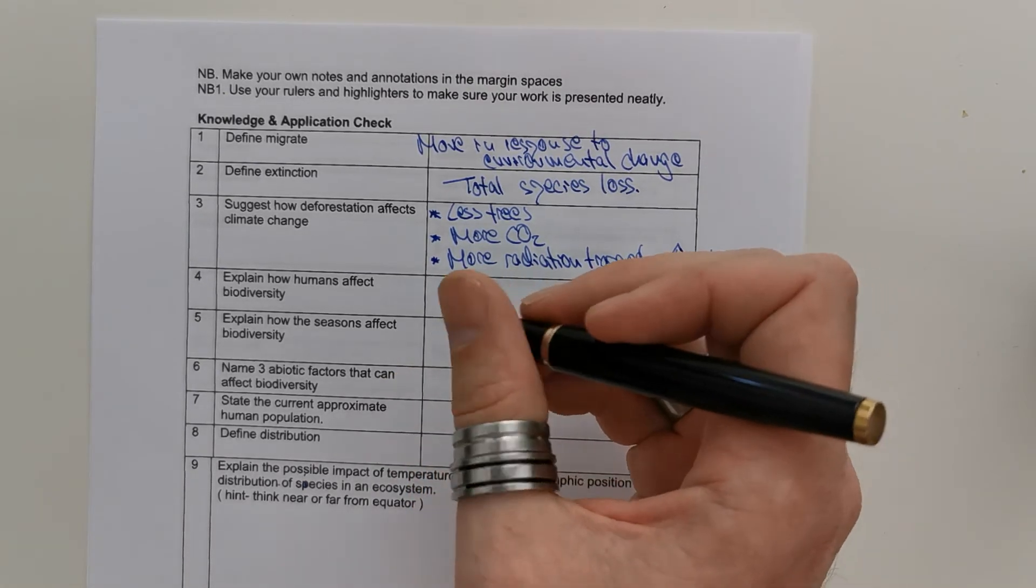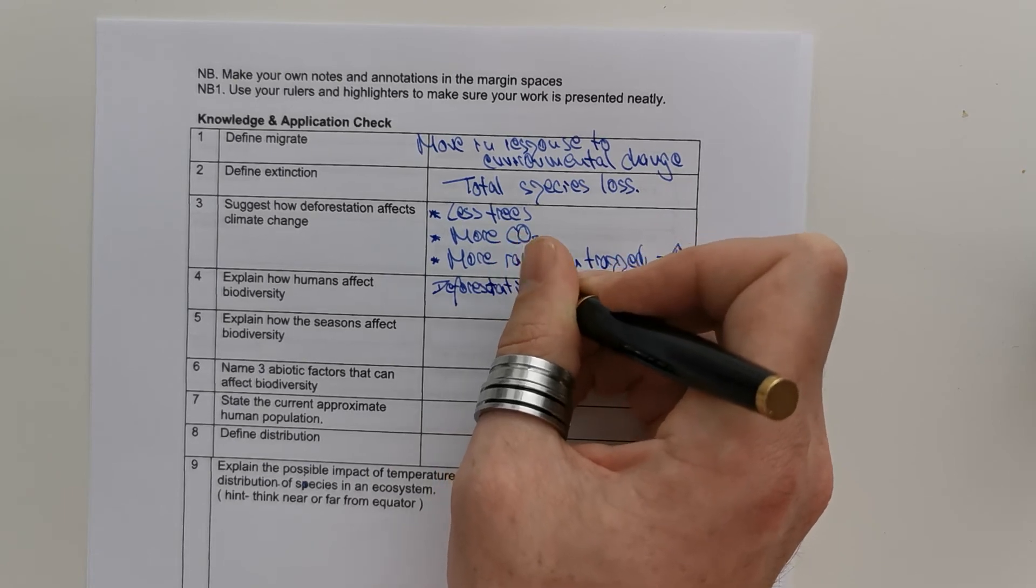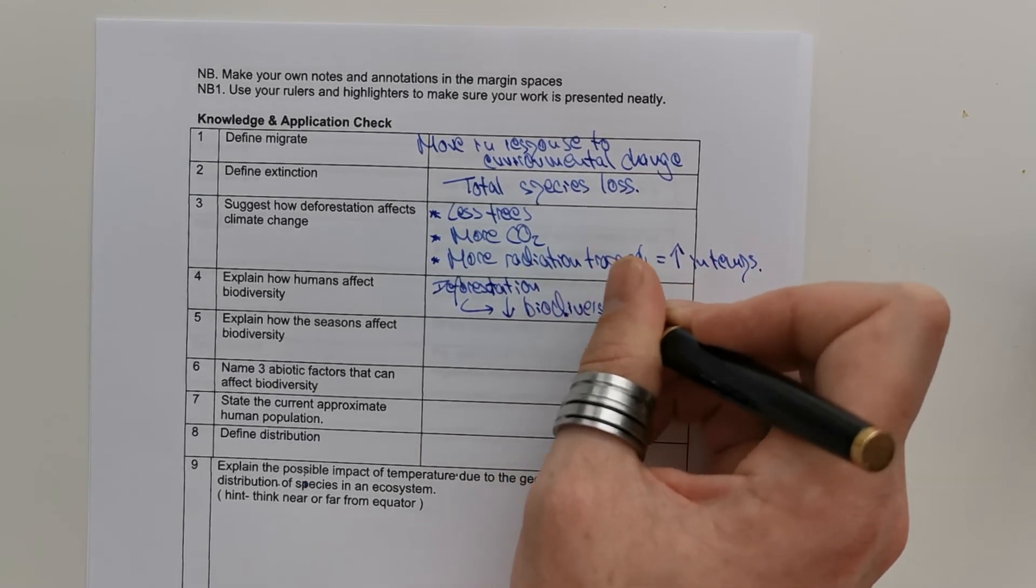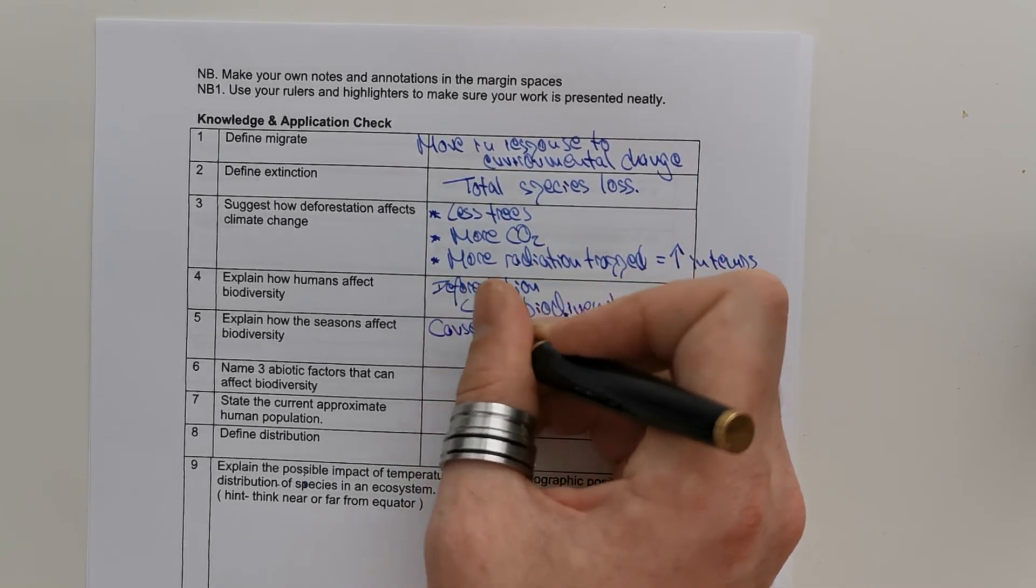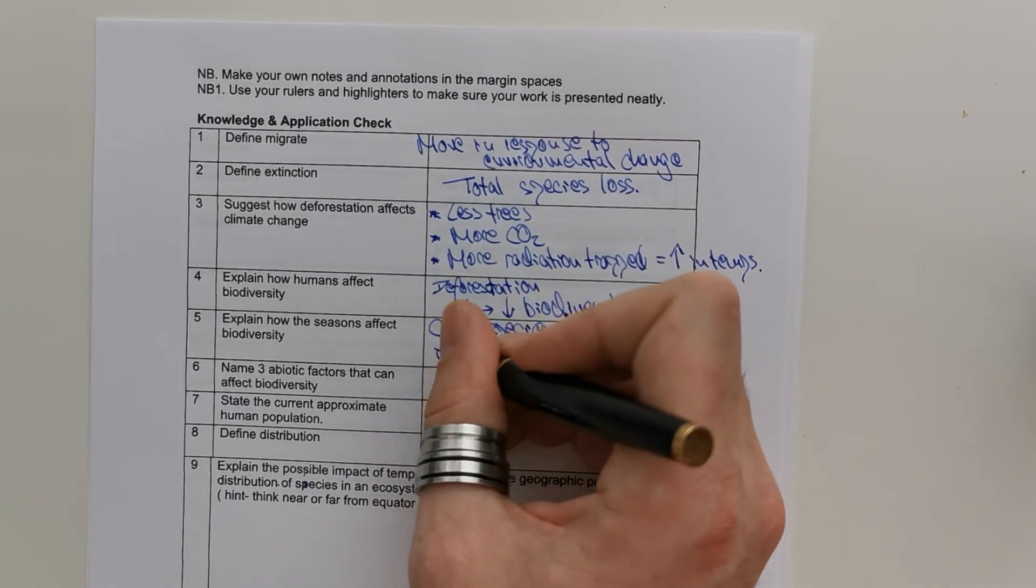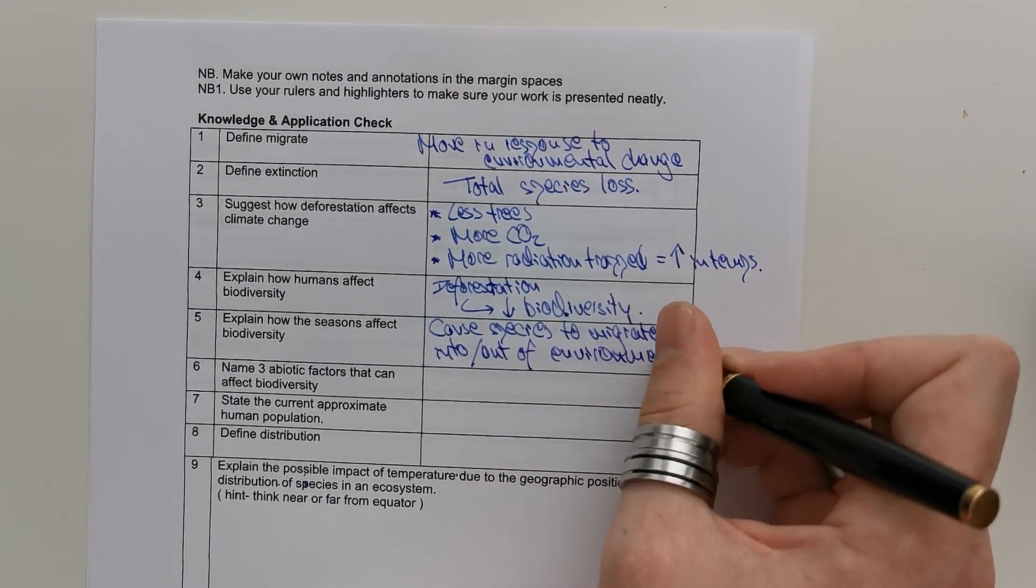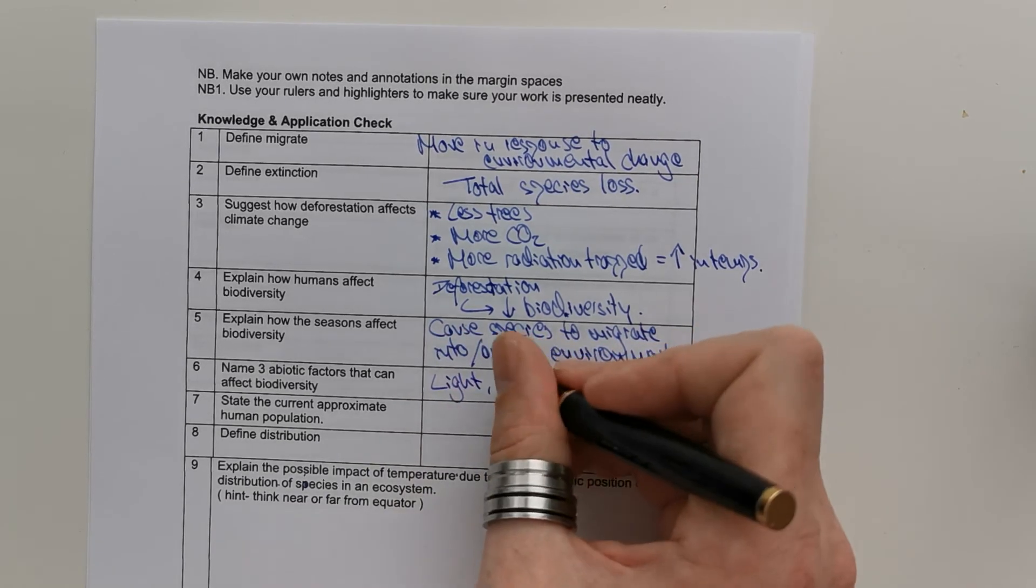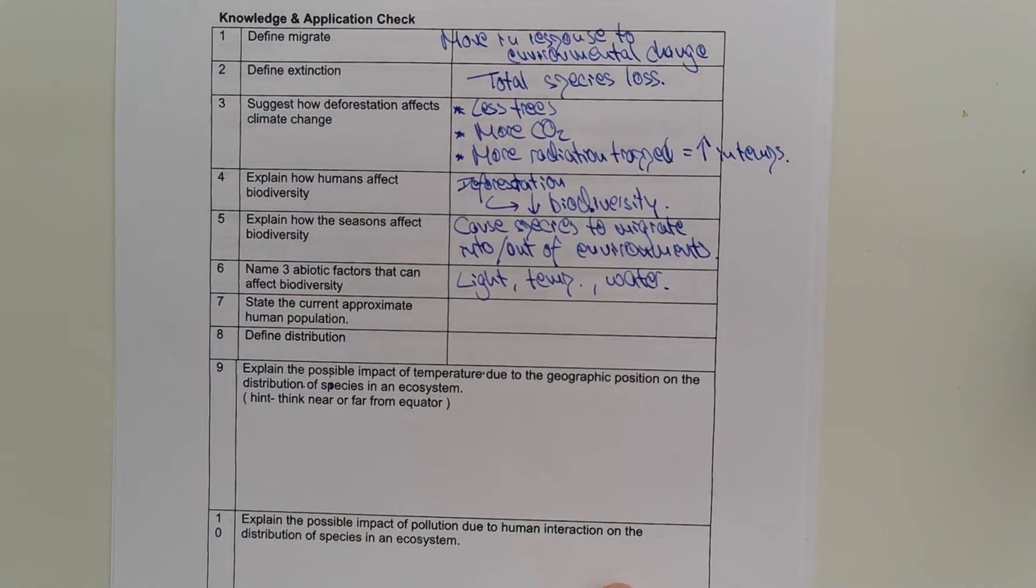Explain how humans affect biodiversity. So, deforestation, an example, can decrease biodiversity. And that is a human effect. How do the seasons affect biodiversity? Seasons can cause species to migrate into and out of areas, which can affect their biodiversity. Name three abiotic factors that can affect biodiversity. Light, temperature, and water. These are all non-living factors that can affect the ability of species to live within the environment.